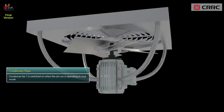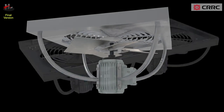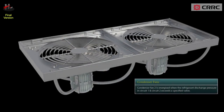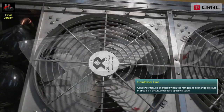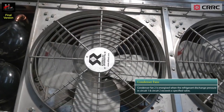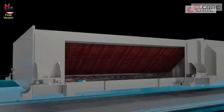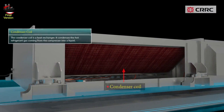Condenser fan 1 is switched on when the air conditioner is operating in cool mode. Condenser fan 2 is energized when the refrigerant discharge pressure in circuit 1 and circuit 2 exceeds a specified value. The condenser coil is a heat exchanger.